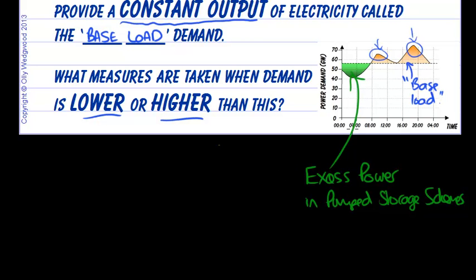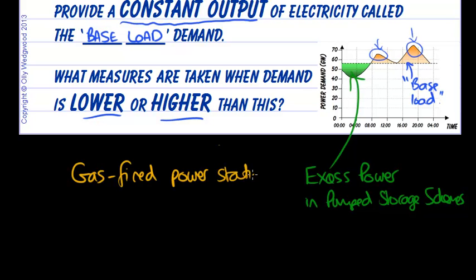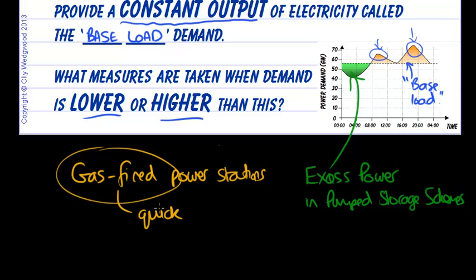The other thing we can do is bring online and offline gas-fired power stations. Gas-fired power stations have a very quick start-up time, so it's easy to bring them online and offline — getting them generating or shutting them down — as the demand throughout the day goes up and down.